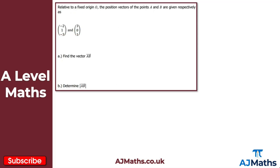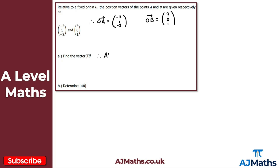Question 2: relative to a fixed origin O, the position vectors of points A and B are given respectively as (-2, 1, -3) and (3, 0, 1). So the position vector OA is (-2, 1, -3) and the position vector OB is (3, 0, 1). Part a asks us to find the vector AB, which equals OB minus OA.